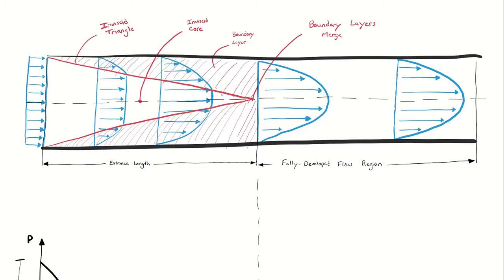Another flow characterization we make is the distinction between developing flow and developed flow. To consider the difference, let's look at uniform flow entering a pipe.